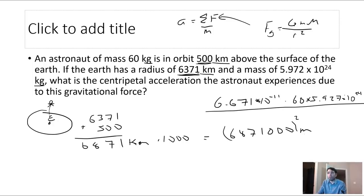You should get about 8.4 or 8.5 m/s² — 8-point-something. Interestingly, you could also find the acceleration the astronaut causes on the Earth by plugging in Earth's mass — it would be really, really small because the Earth is huge.